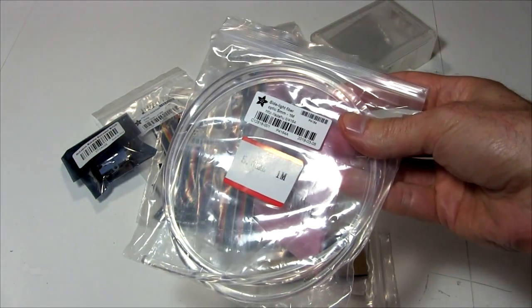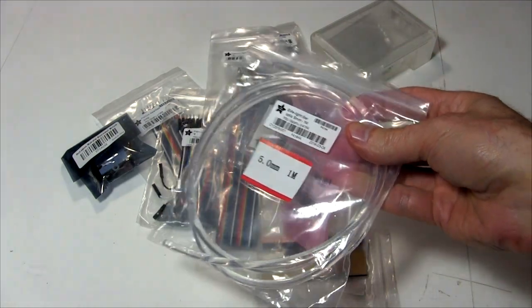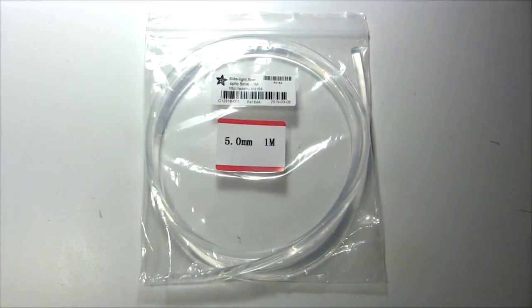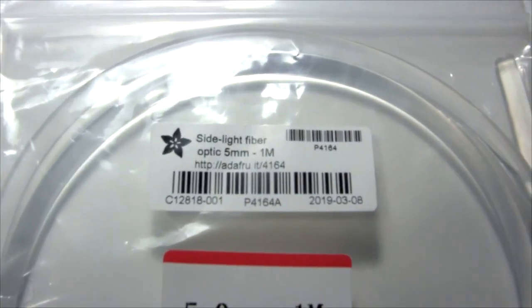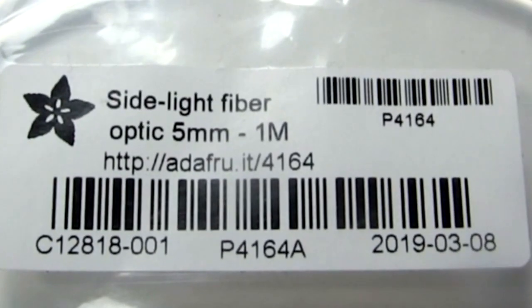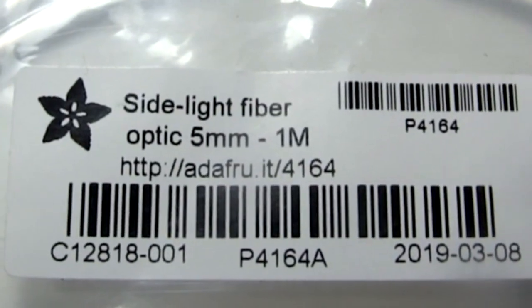One of the things I took was this five millimeter diameter thick solid plastic fiber optic cable, but to my surprise, it wasn't what I expected. The label calls it a side light fiber optic cable, something I'd never heard of.